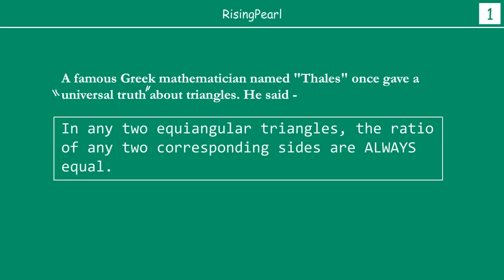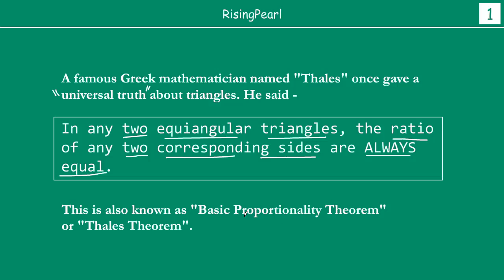So what did Thales say about triangles? He said: in any two equiangular triangles, the ratio of any two corresponding sides will always, always be equal. This is what is called the basic proportionality theorem.